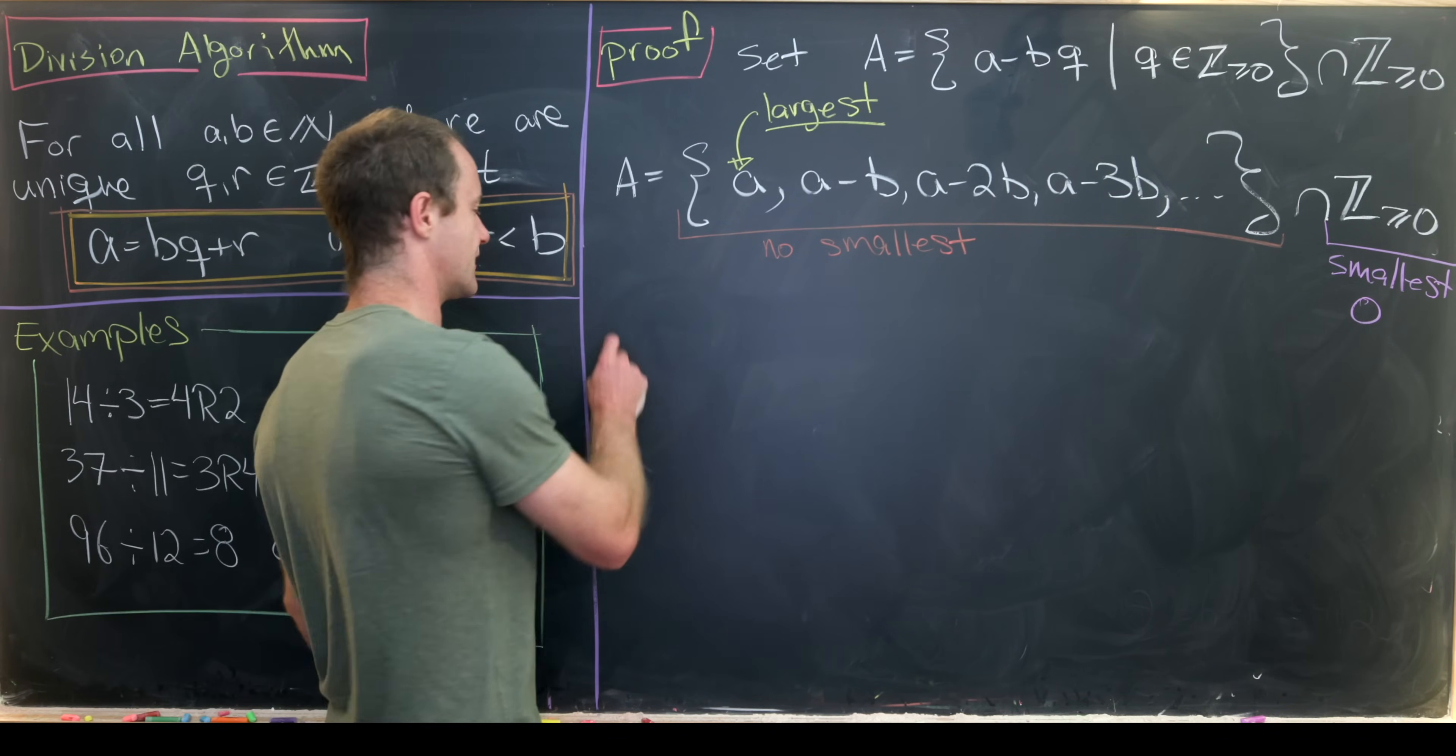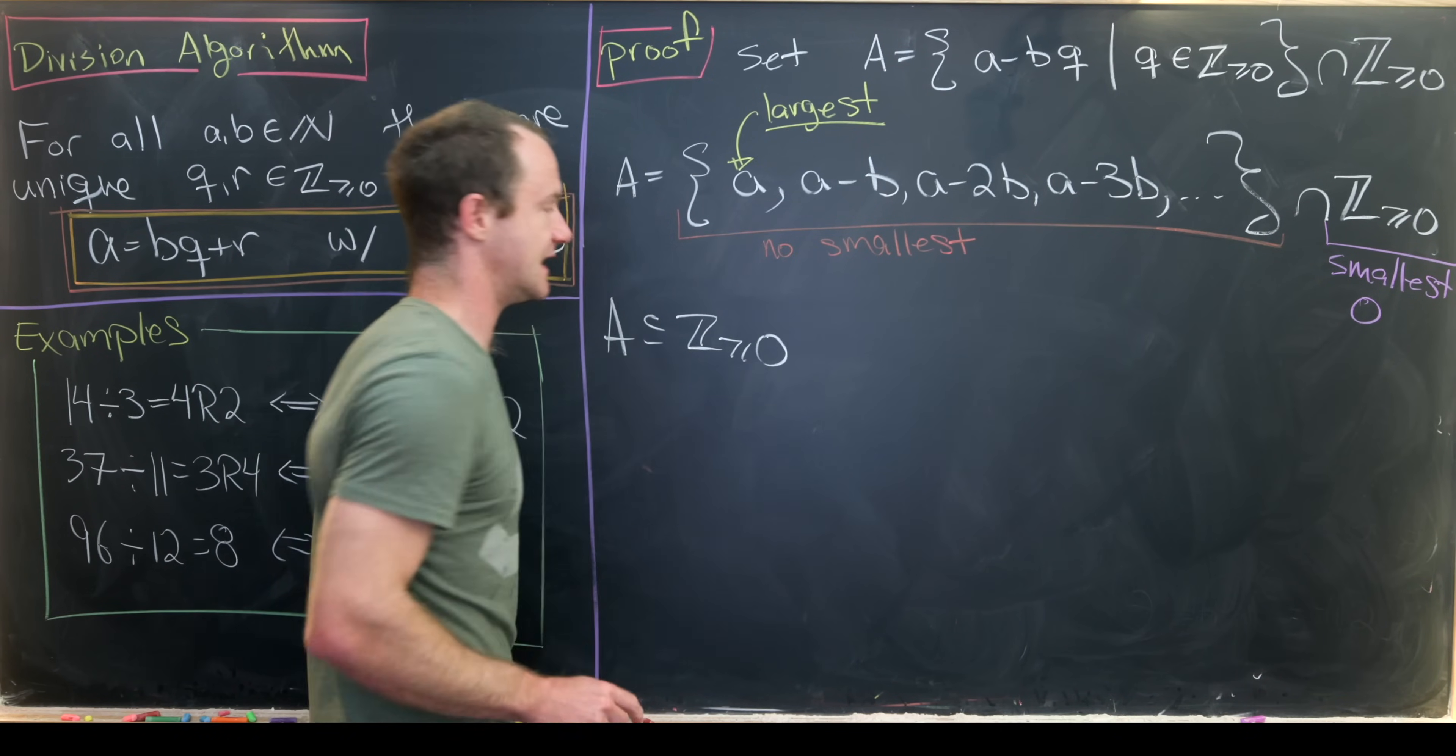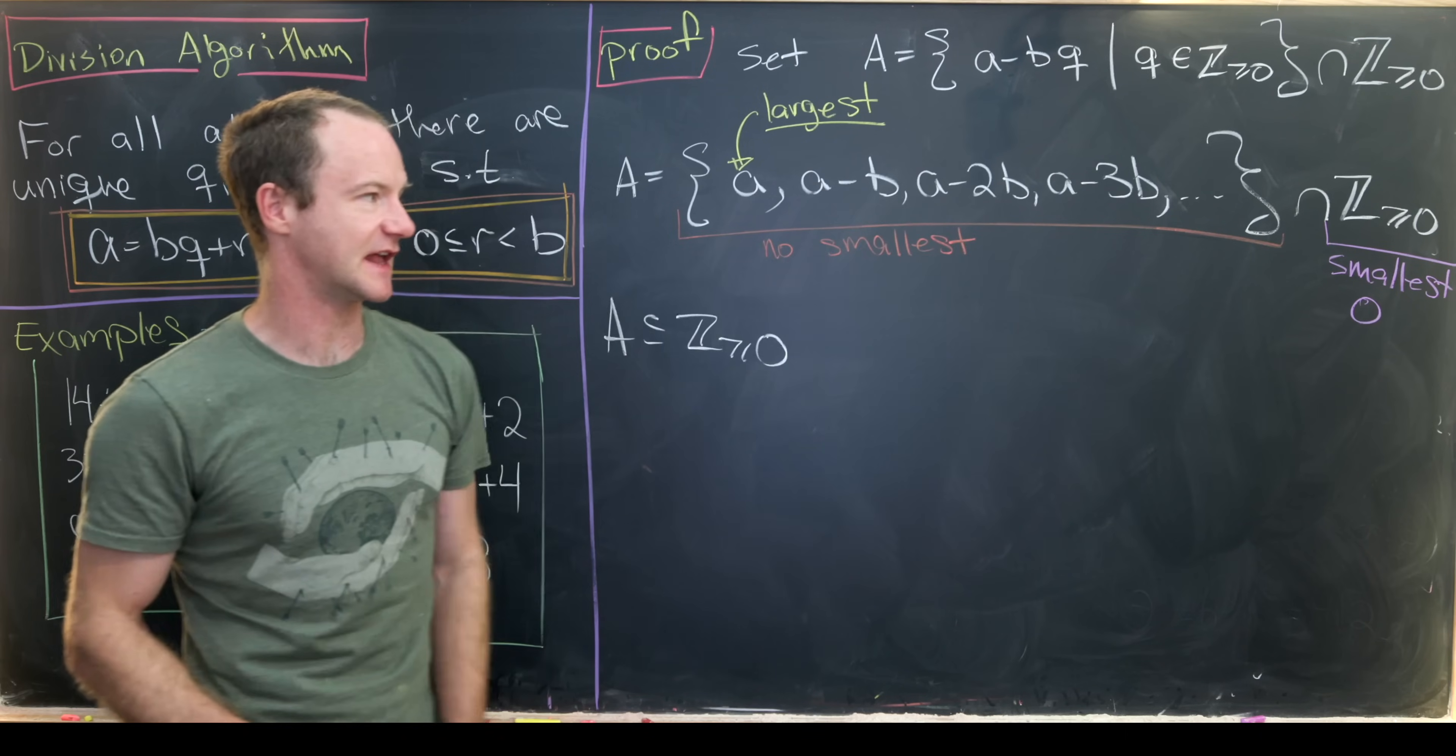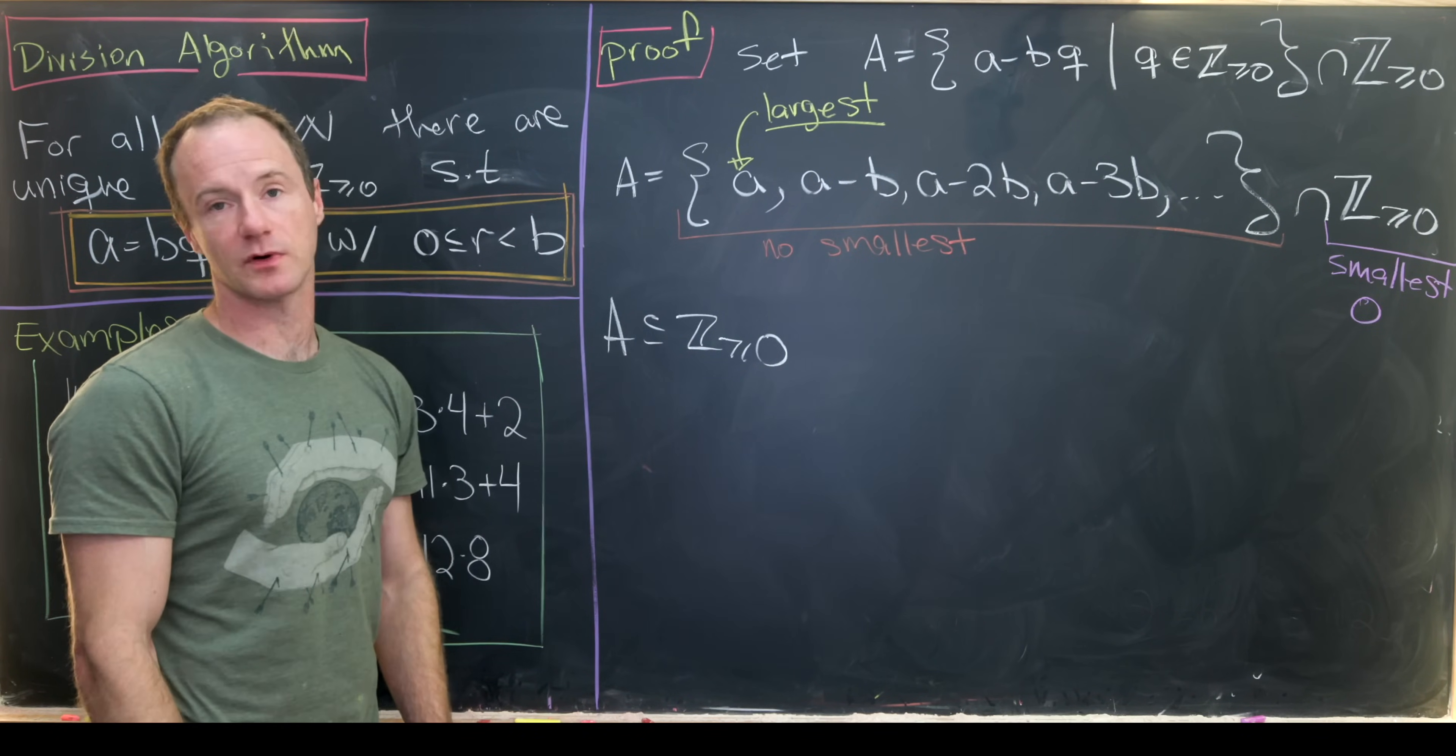Whereas this thing over here has a smallest element for sure, and the smallest element here is the number 0. So putting all of this together, we see that A is a subset of the non-negative integers, and that's because we've got that intersection over there.